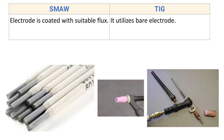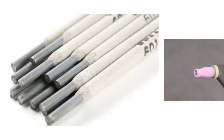Next difference: in SMAW, the electrode is coated with suitable flux. The electrode is coated with a suitable material to protect it from corrosion. The flux gets disintegrated during the welding process and provides shielding to the weld deposition.